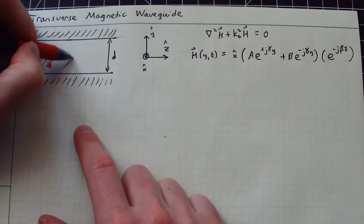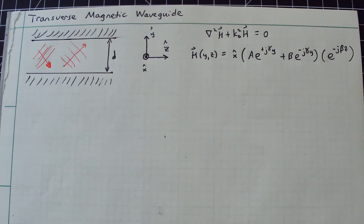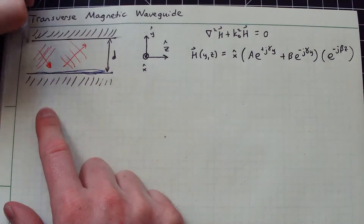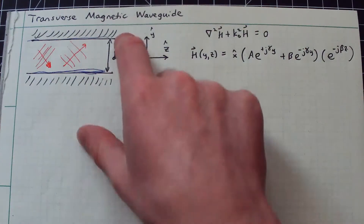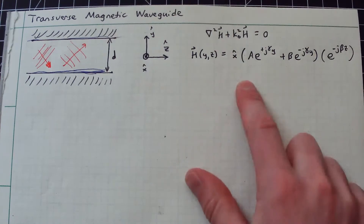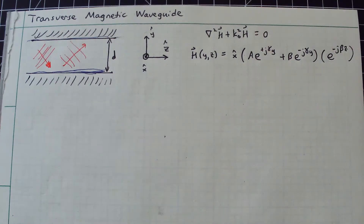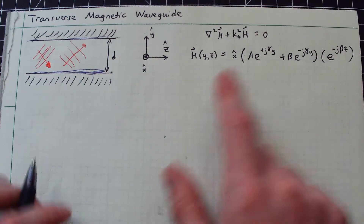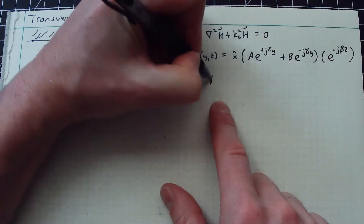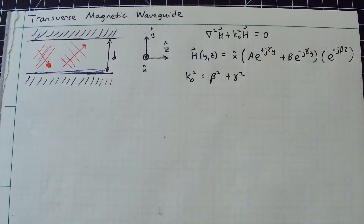This is essentially a superposition of two waves — one plane wave going in one direction and another going the opposite direction. Adding them together, we can find conditions that satisfy the boundaries. From the Helmholtz equation, we get the relationship k₀² = β² + γ², which is the constraint between these coefficients.